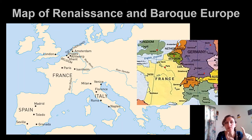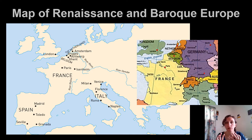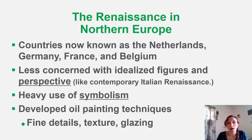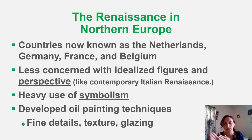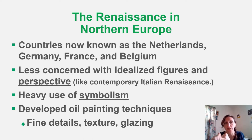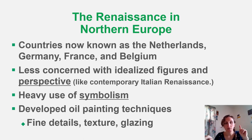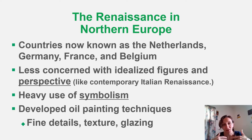We're focusing this lecture on the northern area between France and Germany — Belgium and the Netherlands. The colored map is a contemporary map of borders just to give you an idea of where we are. I'm going to make a few comparisons between the Italian Renaissance, which we haven't talked about yet, and the Northern Renaissance. Just so you know, these things are happening simultaneously in two different geographic areas.